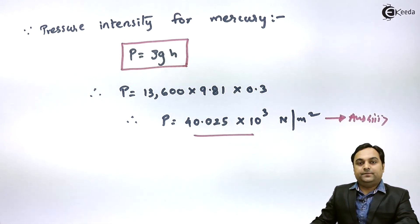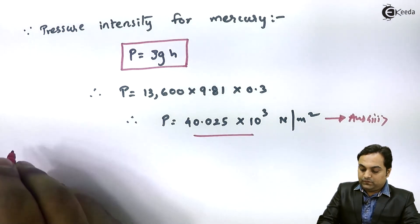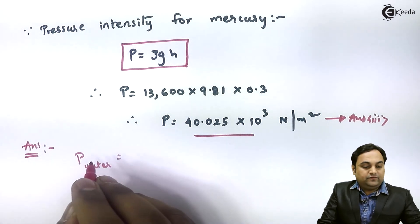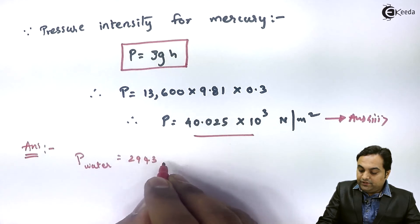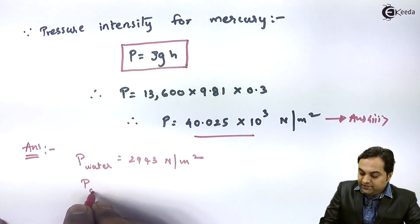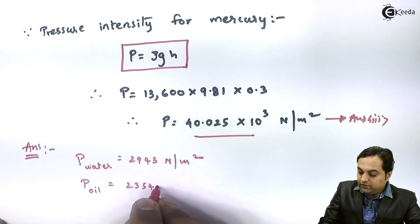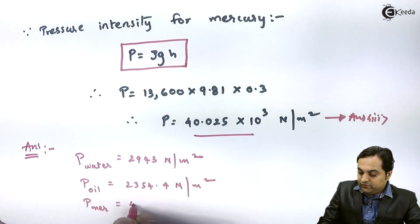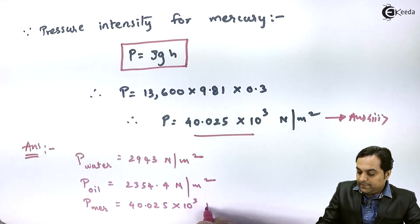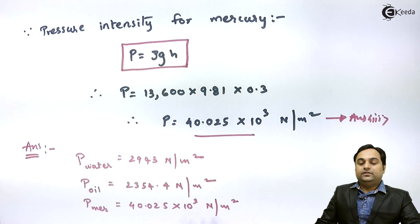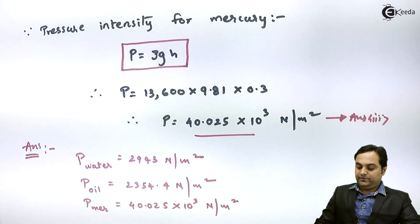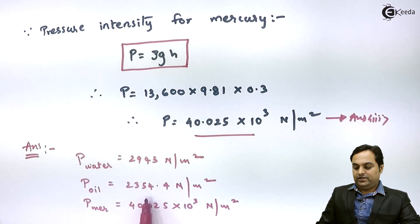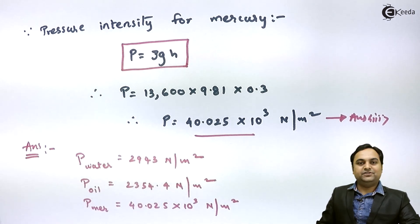Comparing the final answers: pressure intensity exerted by water is 2943 N/m², by oil is 2354.4 N/m², and by mercury is 40.025 × 10³ N/m². The pressure exerted by mercury is the most — mercury being heavier, its pressure intensity is greater. Then comes water, and the lightest is oil. I hope this video helped us understand pressure intensity calculations.